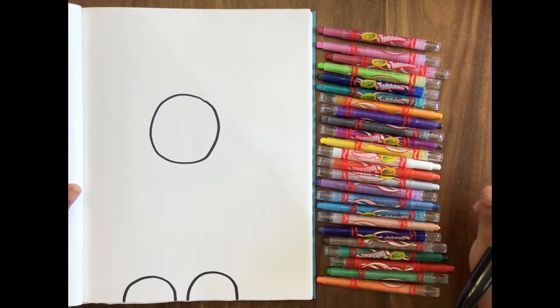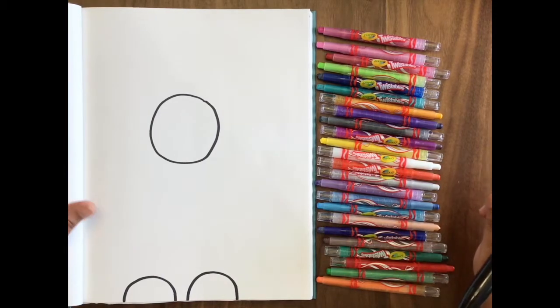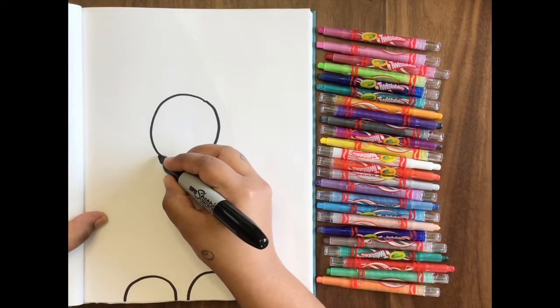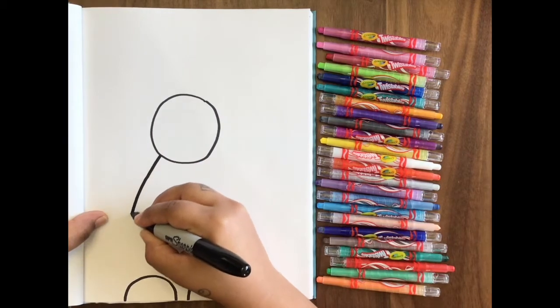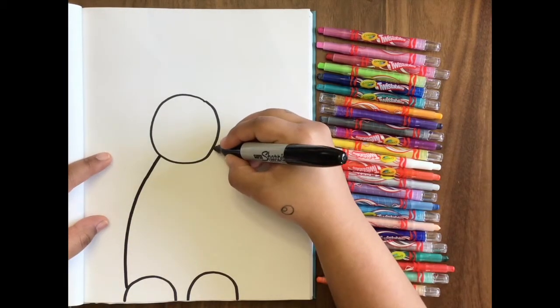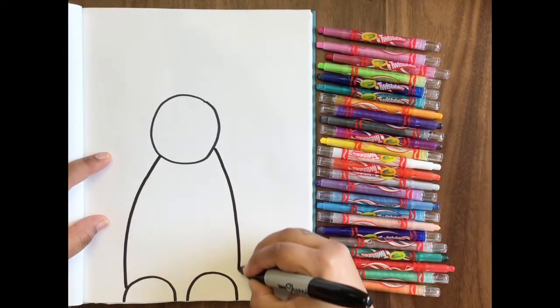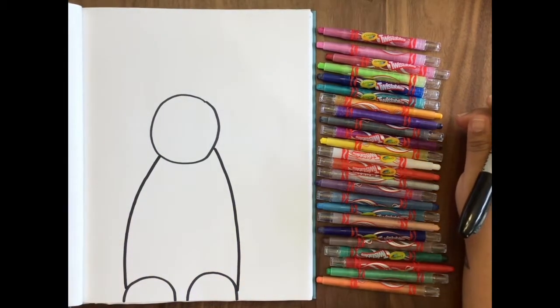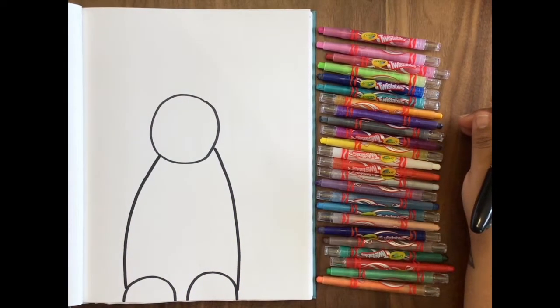Now we're going to connect the head and the feet using two curved lines. We're going to take one from the head down to here and the other one down to here. So now we should have a head, a body, and two feet.